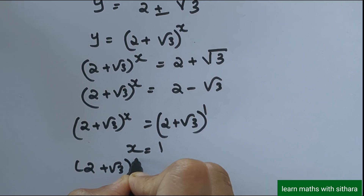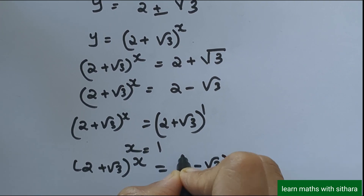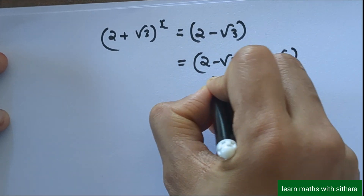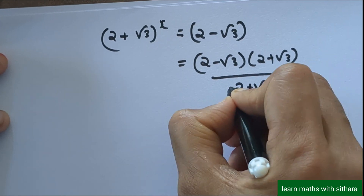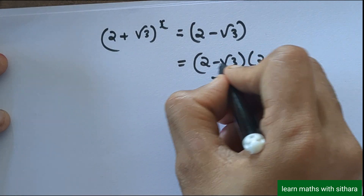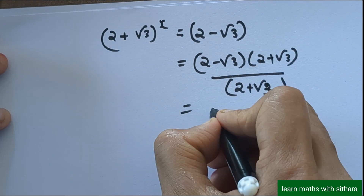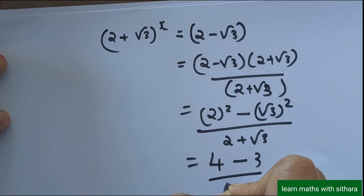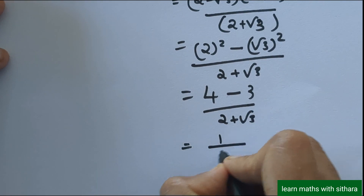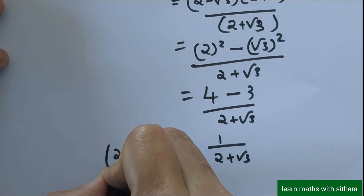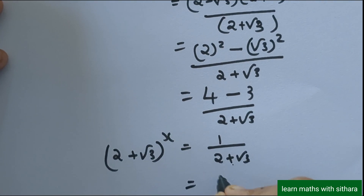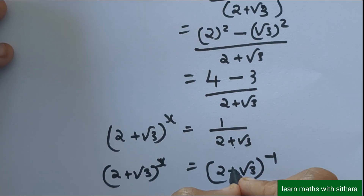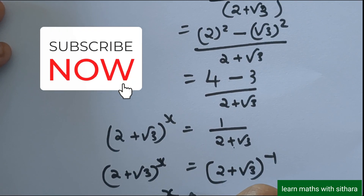For the second solution: (2 + √3) raised to x equals (2 − √3). We can write 2 − √3 by multiplying by its conjugate: (2 − √3)(2 + √3) / (2 + √3) = (4 − 3) / (2 + √3) = 1 / (2 + √3), which equals (2 + √3) raised to −1. So (2 + √3) raised to x = (2 + √3) raised to −1, giving x = −1.